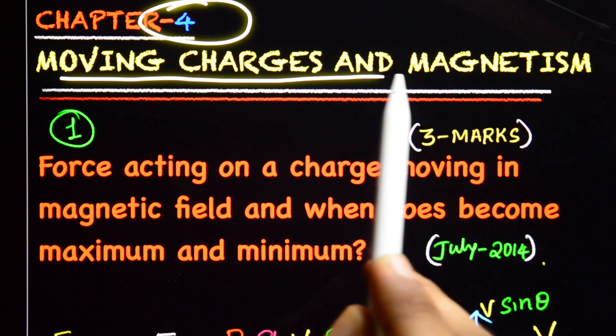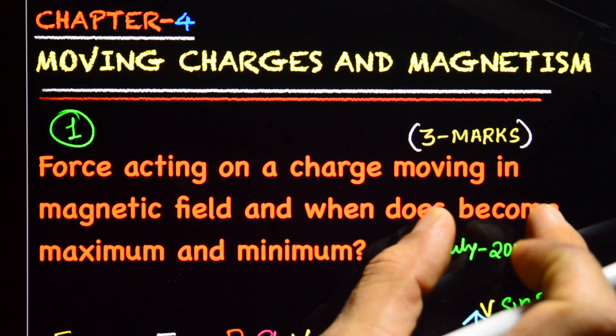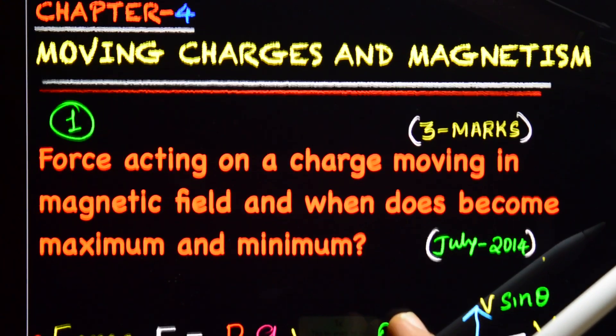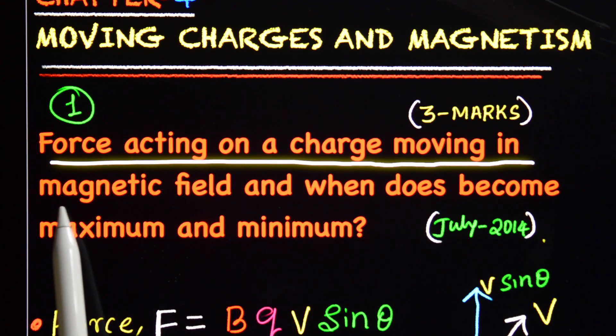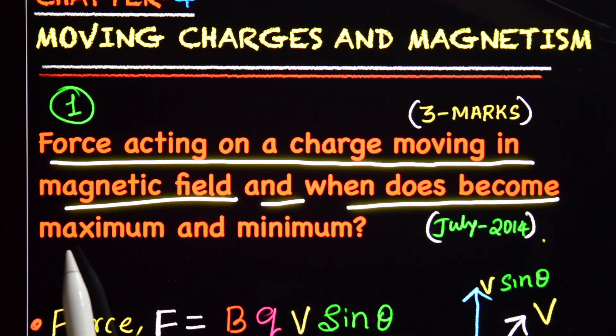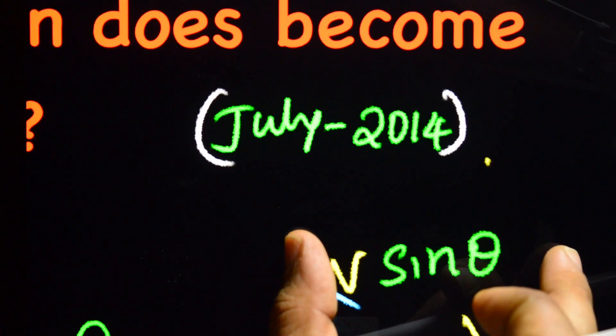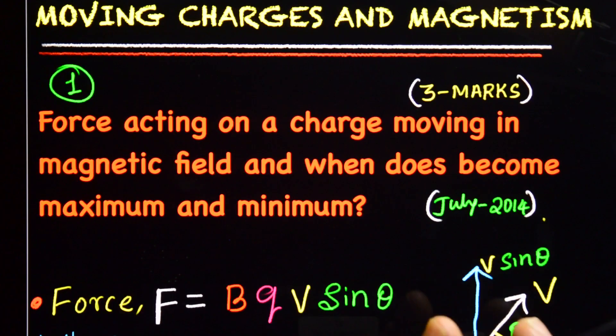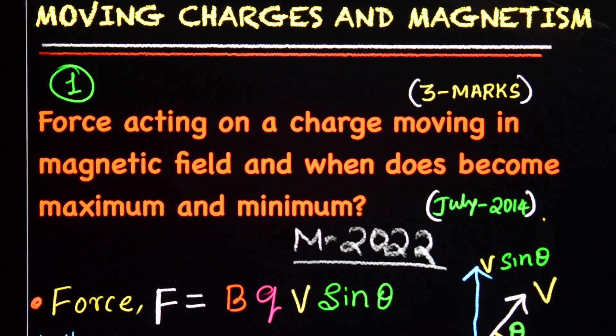Chapter 4: Moving Charges and Magnetism. This is our first topic and this is a 3 marks topic. Force acting on a charge moving in magnetic field and when does it become maximum and minimum? This is the question of July 2014. I think this is in March 2022, I think this is a question.